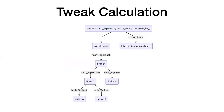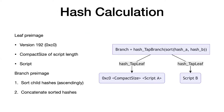For the most complicated scenario — where the top-level tree is a branch that branches into another branch and also a leaf — you hash each script using the TapLeaf tag, combine them, and whenever there's a branch you hash it using the TapBranch tag. That propagates all the way up to the Merkle root, which you dump into the TapTweak pre-image alongside the x-coordinate of the internal key. The Merkle root comes first, then the internal key, and you hash that to get the tweak.